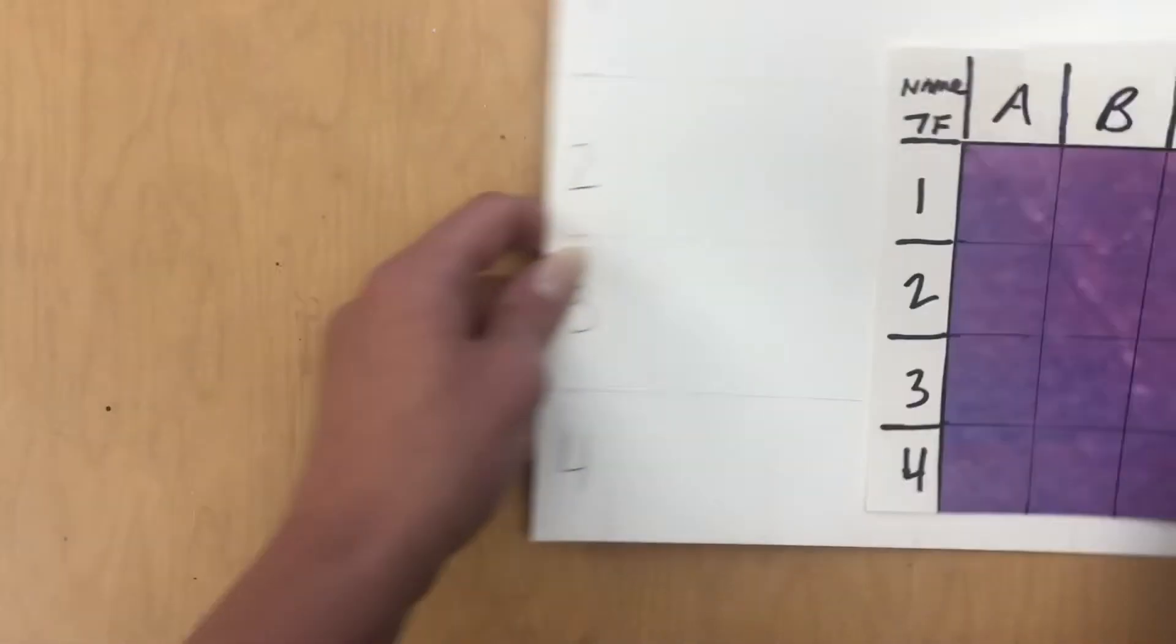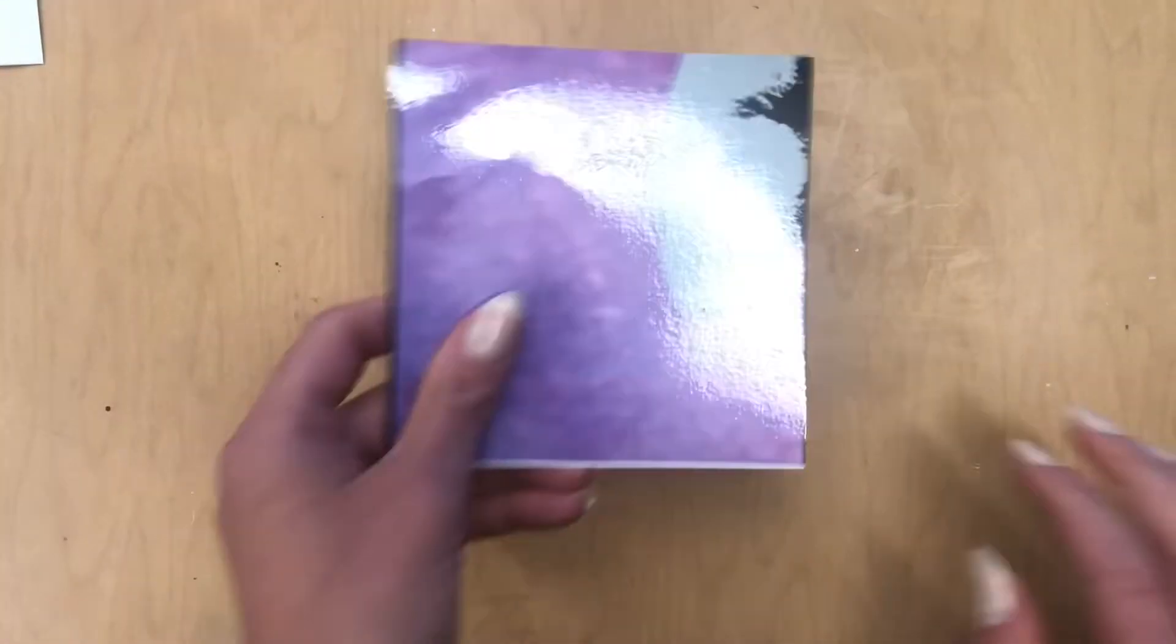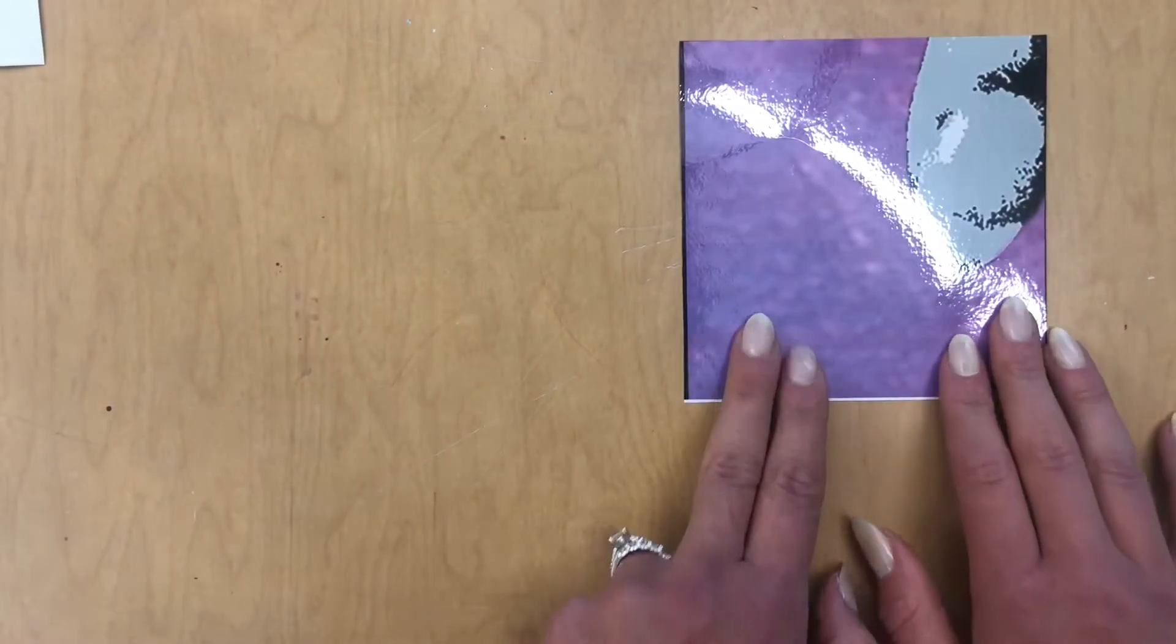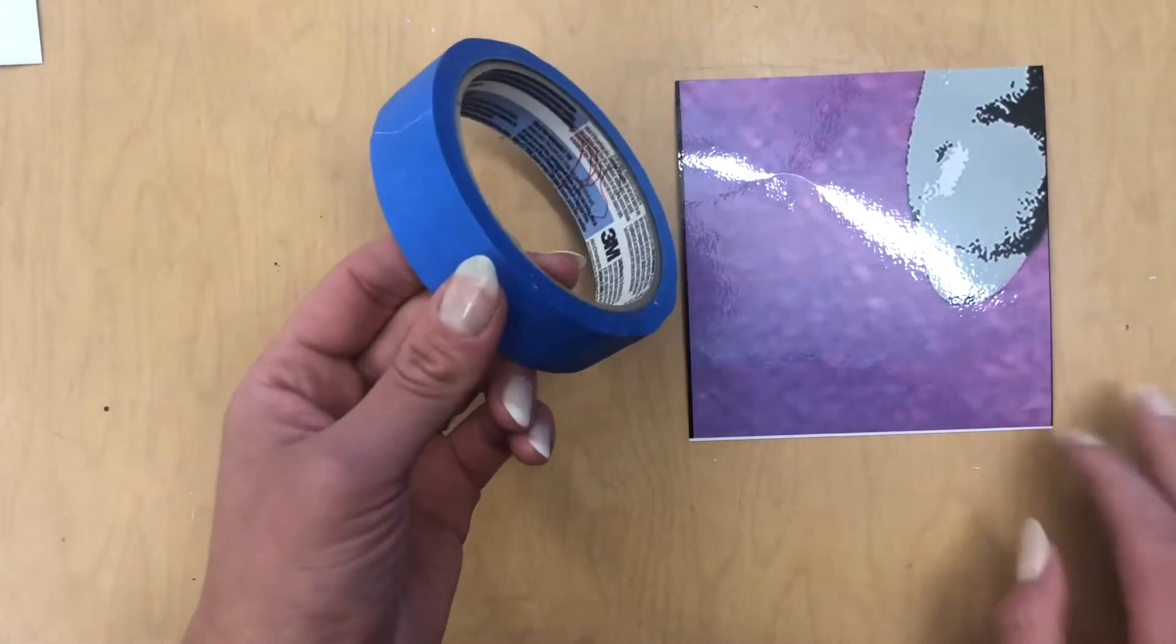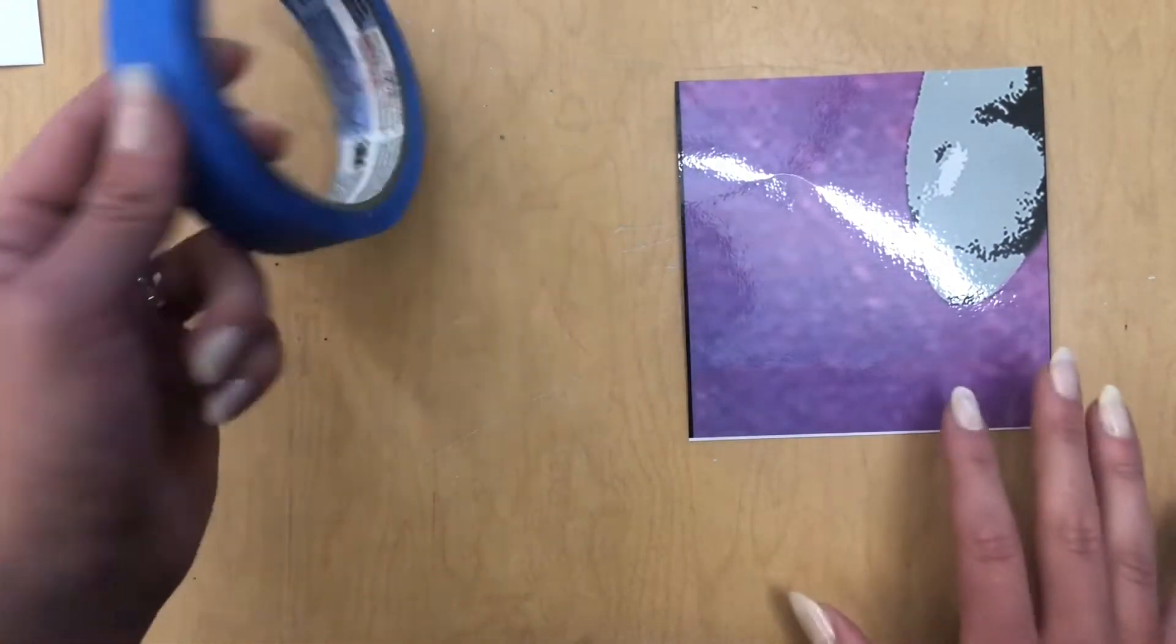So let's get started. What you're going to need is your mural block. You're going to need a roll of tape. Any type of tape works fine. I just have painters tape on hand. You can use masking tape or scotch tape.